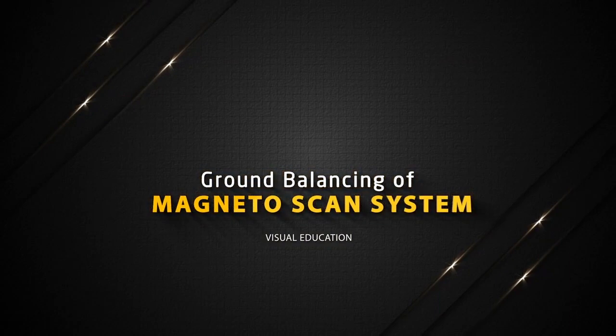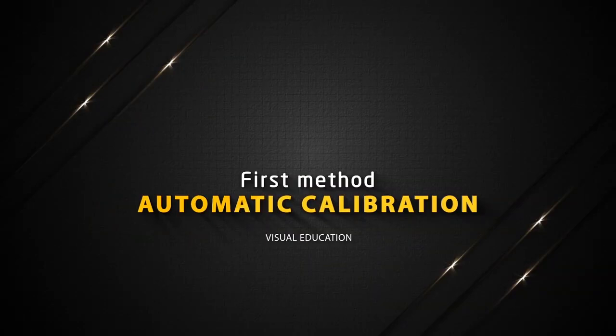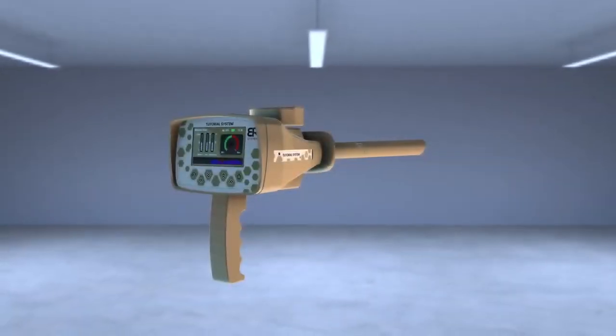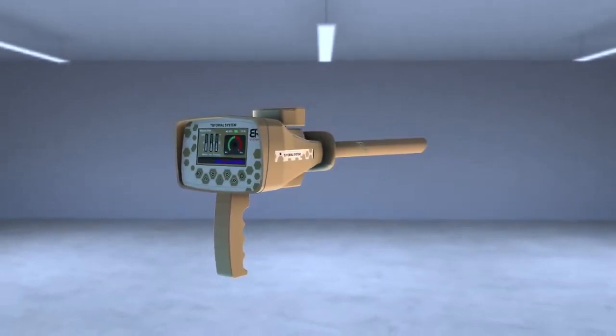Ground balancing of Magneto Scan system. First method: Automatic calibration. This is the recommended method for ground balancing.